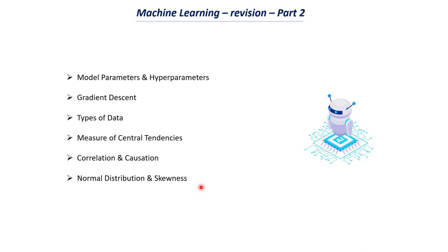We will also cover correlation and causation, and finally normal distribution and skewness. The last four topics are more on the statistics side. Once this part is completed, the next part of this machine learning revision will cover how to solve a machine learning use case and the different steps to follow.